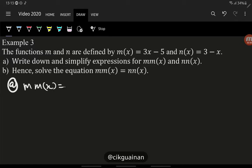So m(m(x)) equals m inside, what inside? Have another m. So we define the m first. The inside m is 3x minus 5, then close. So the outside m is also 3x minus 5.